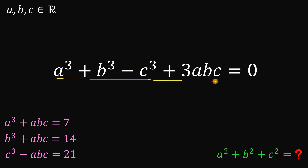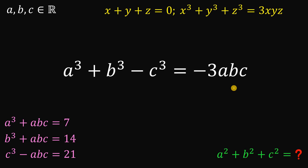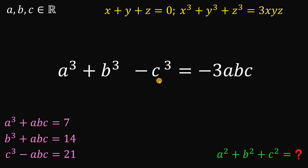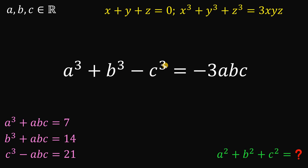We have this expression on the left-hand side. Recall this identity: if x plus y plus z equals 0, then x cubed plus y cubed plus z cubed equals 3xyz. We can rewrite our expression as a cubed plus b cubed plus negative c raised to the power of 3 — this is just minus c cubed.